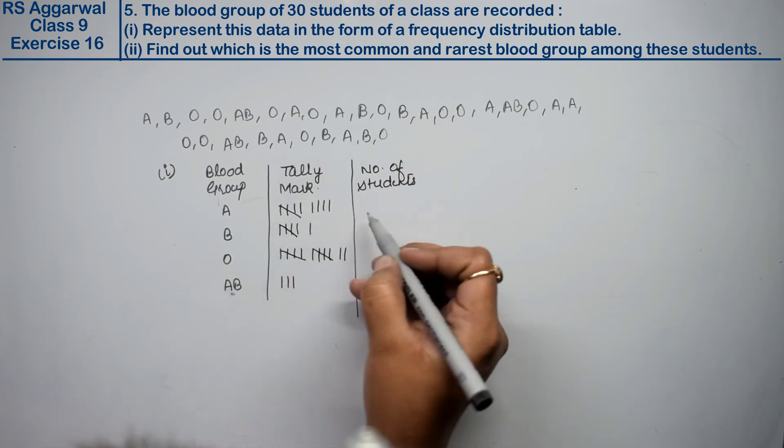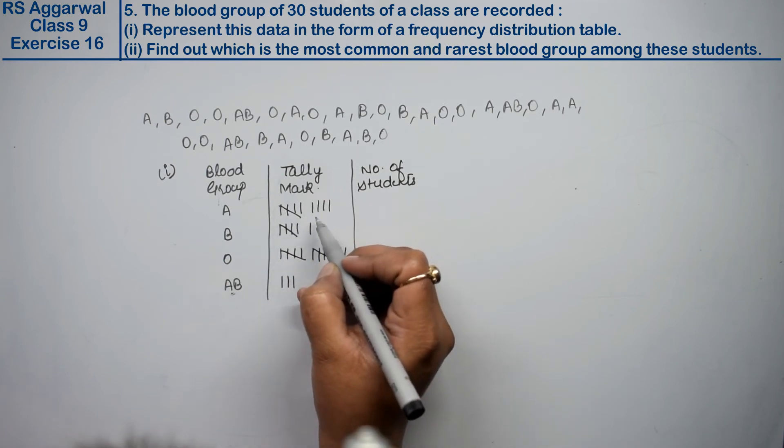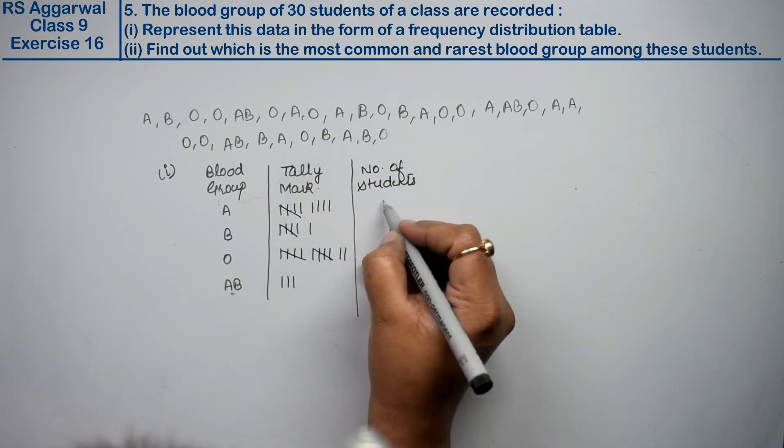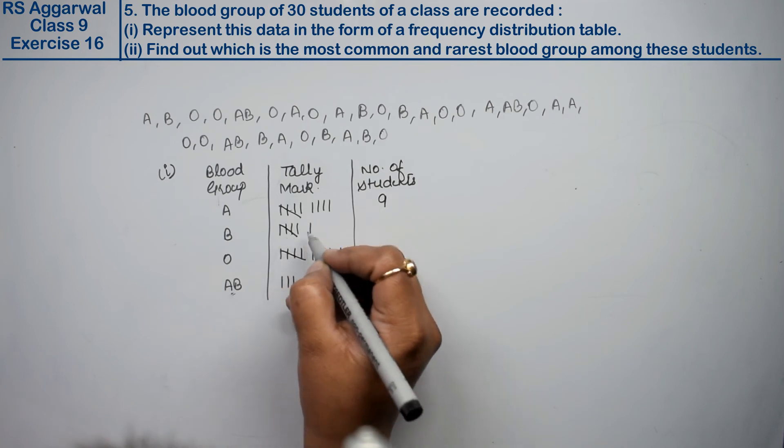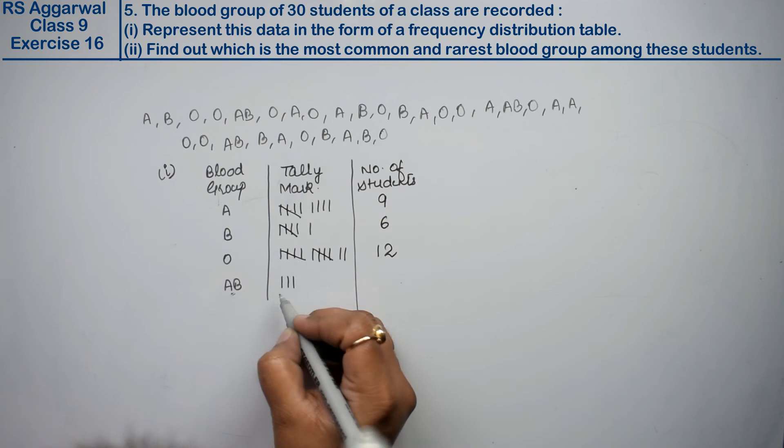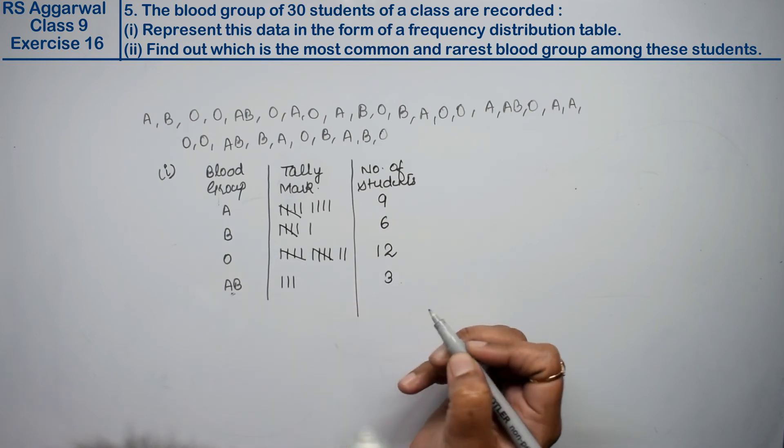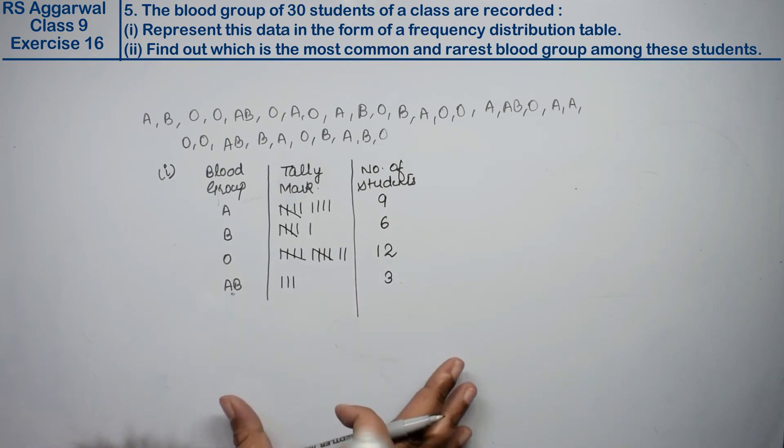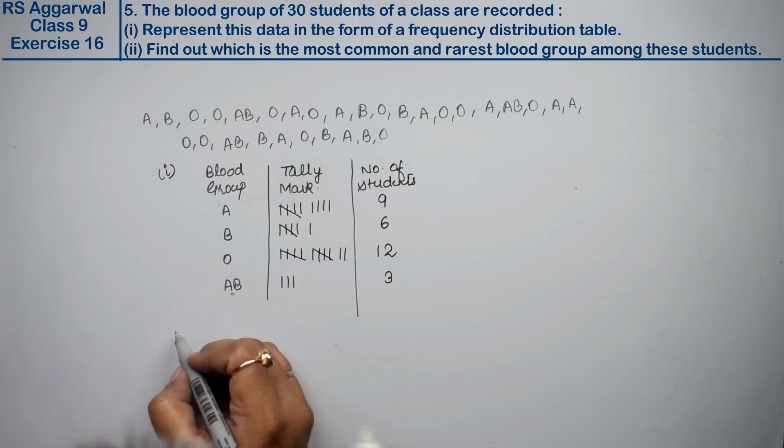Now let's count this. Look, it's cross 5, so 5 or 4, 9. This is 5 and 6, then 10 and 12. And how much? 3. Now this is our frequency distribution table. This is the answer of first part.